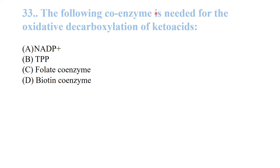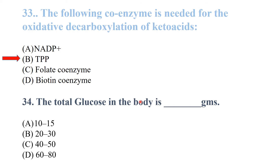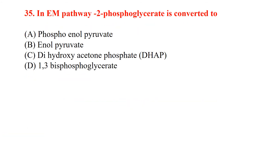Which coenzyme is needed for the oxidative decarboxylation of keto acids? The required coenzyme is TPP (thiamine pyrophosphate) — it is the coenzyme for oxidative decarboxylation of keto acids. The total glucose in the body is approximately 20 to 30 grams.